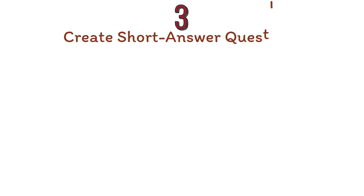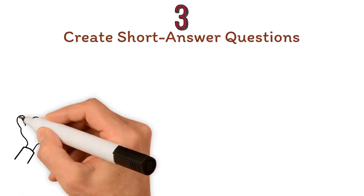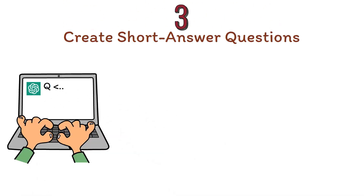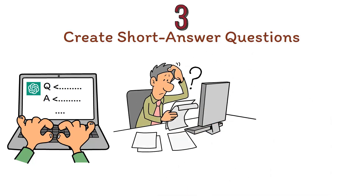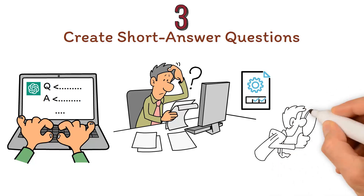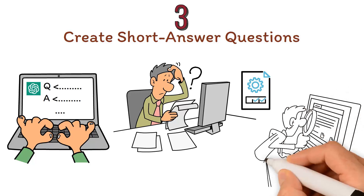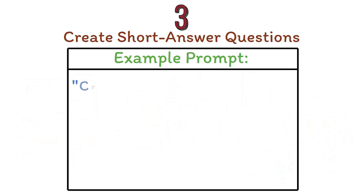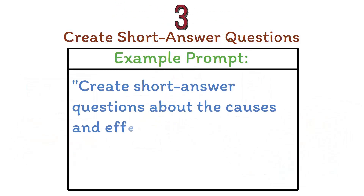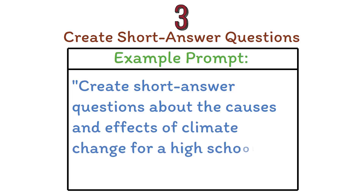Number three: create short answer questions. ChatGPT can also create short answer questions that require students to think critically and provide more in-depth responses. These questions encourage deeper understanding and analysis of the subject matter. Example prompt: Create short answer questions about the causes and effects of climate change for a high school environmental science class.